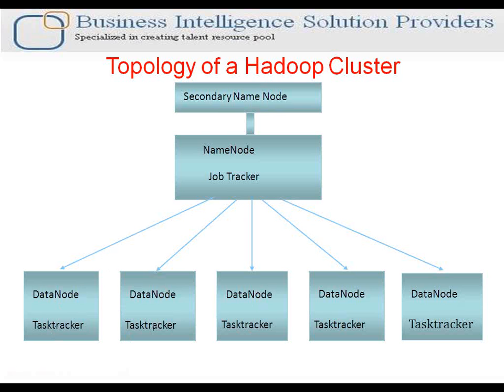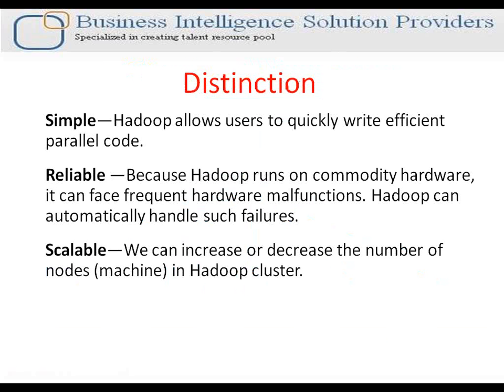Next is the distinction — how a Hadoop framework is different from other frameworks. The first feature is simplicity: the software is quite simple — we can download it from the Apache website and use simple hardware. Any PC or laptop you have at home can be used for installing Hadoop. We can write efficient MapReduce programs capable of executing on multiple machines and handling very large amounts of data, which was not possible without Hadoop.